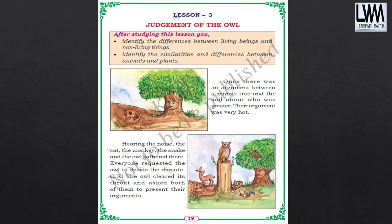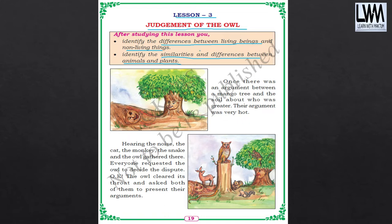Let us start the lesson. Lesson number 3: Judgment of the Owl. In this lesson, what we will be understanding? We will be understanding the differences between living beings and non-living things. And also, we will see some of the similarities and differences between animals and plants.